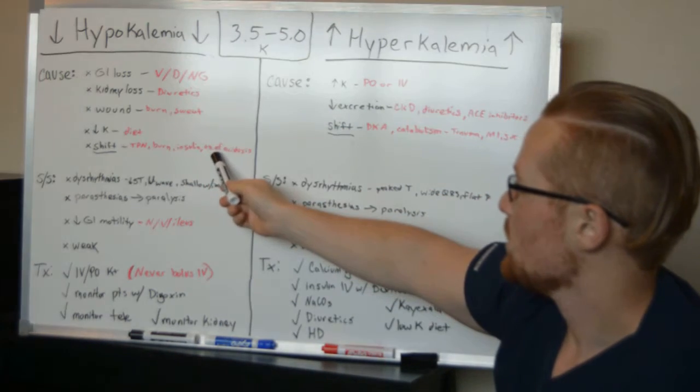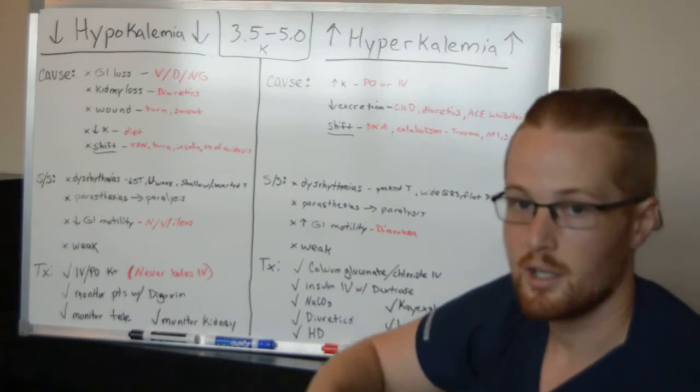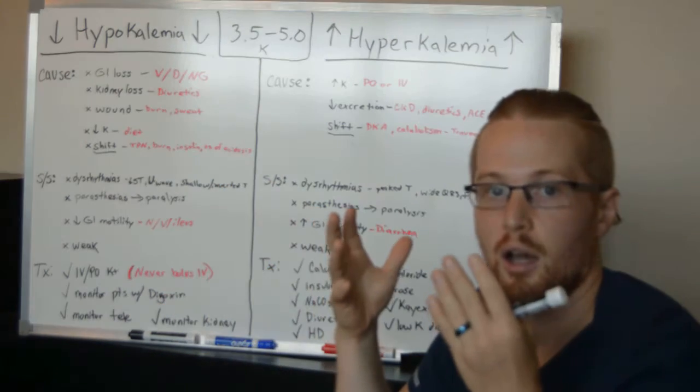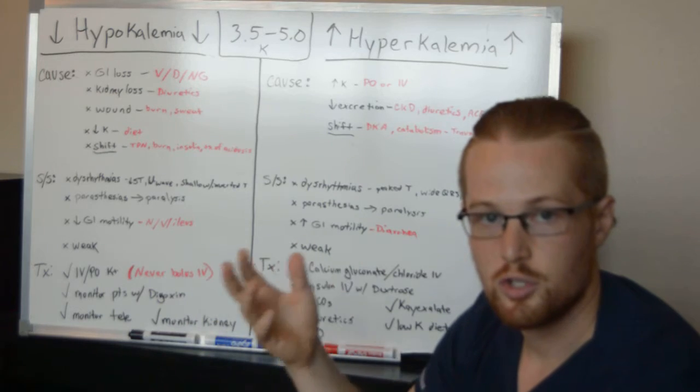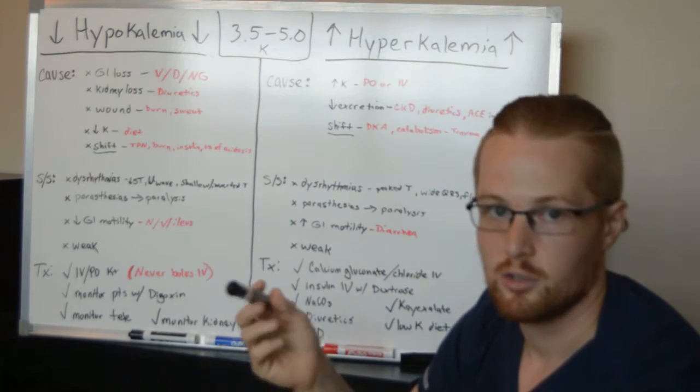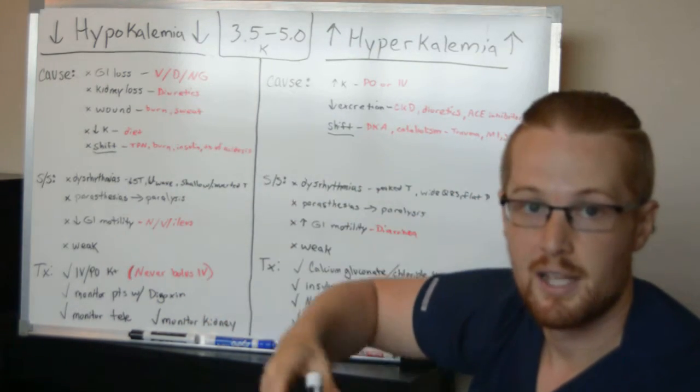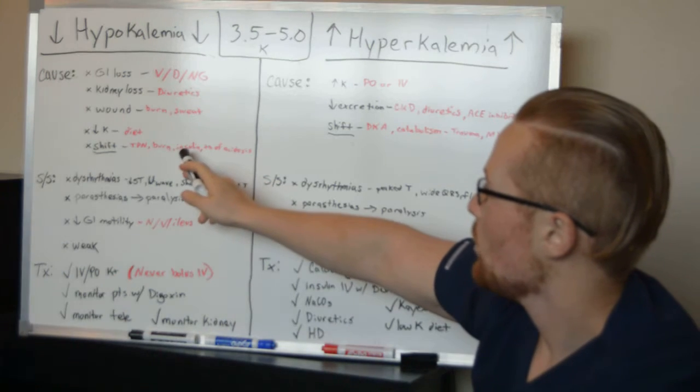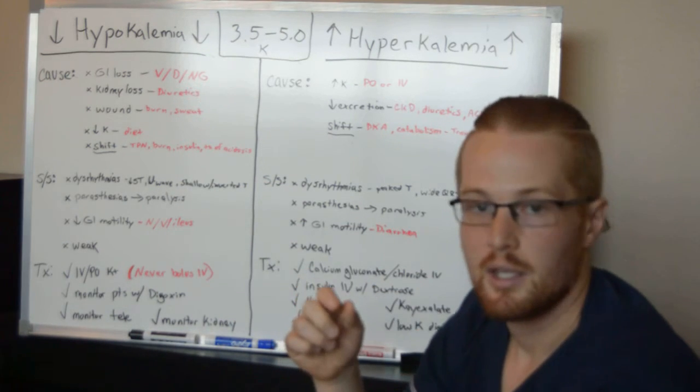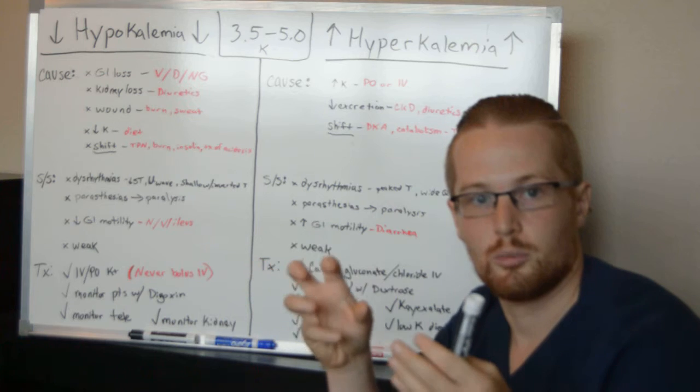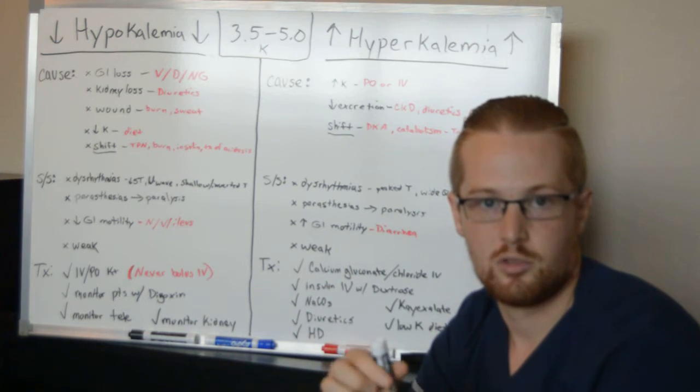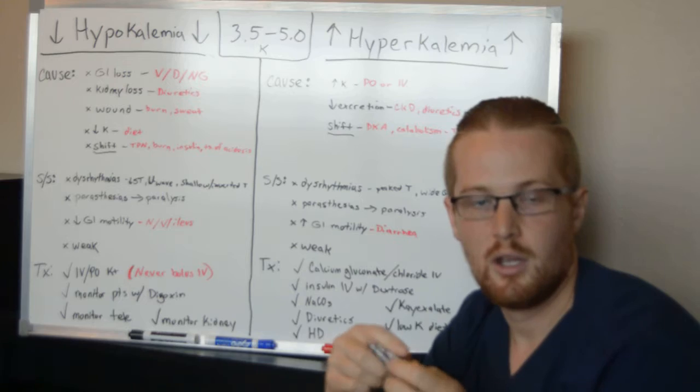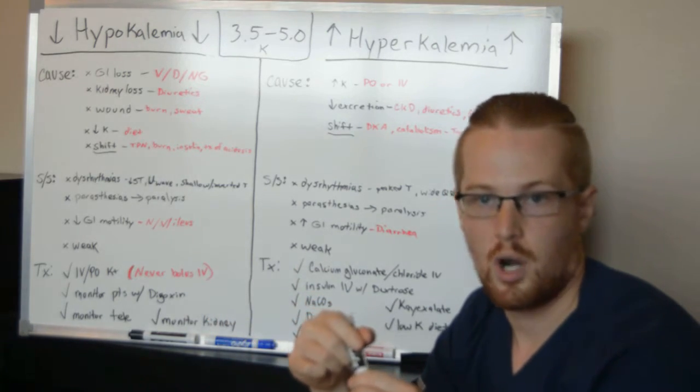An example of this would be if a patient was acidotic, they have a lot of potassium and acid in their blood and when you treat it, it's all reabsorbed and it will look like their potassium levels have dropped. Also, insulin, for example, allows cells to absorb sugars and electrolytes such as potassium. So if you give big doses of insulin, it can make the potassium levels drop.